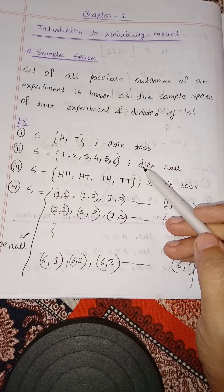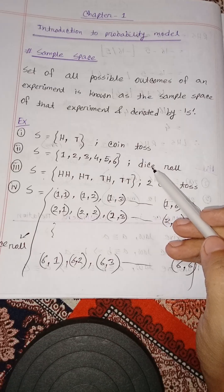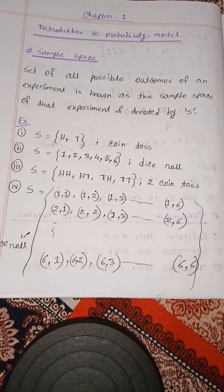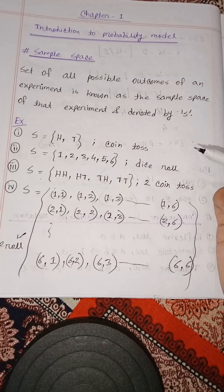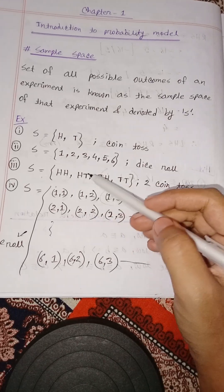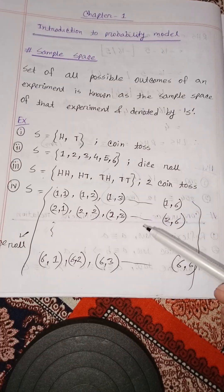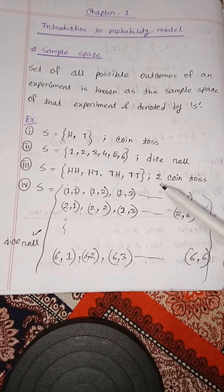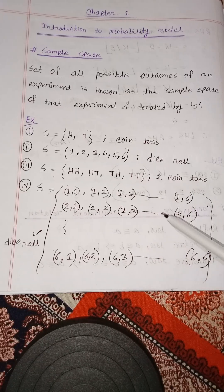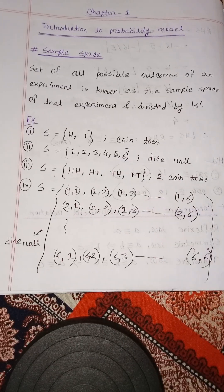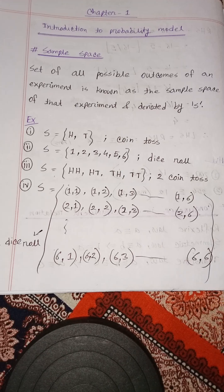Now we will look at the die roll example. When the die is rolled, we test the actual result. The possible outcomes of a die roll are 1, 2, 3, 4, 5, 6. If you roll a dice, there are 6 possible outcomes. Let's look at the sample space.